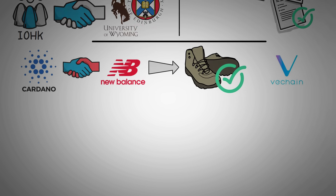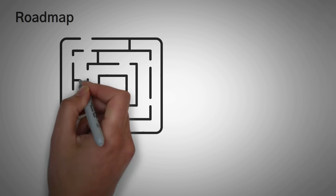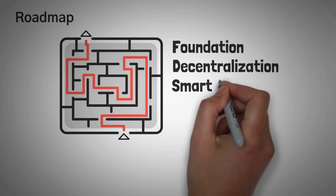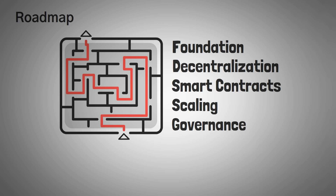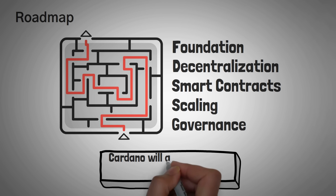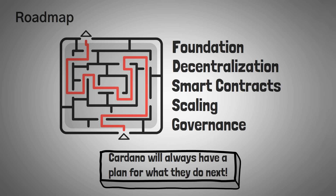As a methodical and precise organization, IOHK has released a roadmap for Cardano's future, which includes five eras: Foundation, Decentralization, Smart Contracts, Scaling, and Governance — which you can actually read if you'd like. Each of these eras takes on a new challenge and adds new products and features to Cardano's capabilities. It's safe to say that regardless of any future utility, Cardano will always have a plan for what they do next.